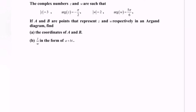The complex numbers z and w are such that the modulus of z is equal to 3, the argument of z is equal to negative pi over 2, the modulus of w is equal to 2, and the argument of w is equal to 5 pi over 6.